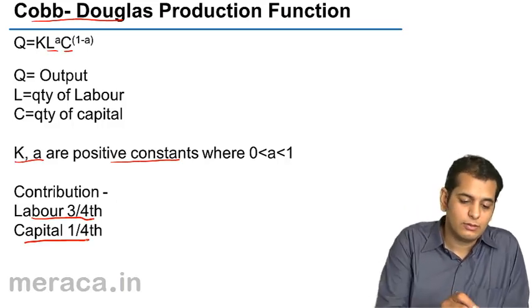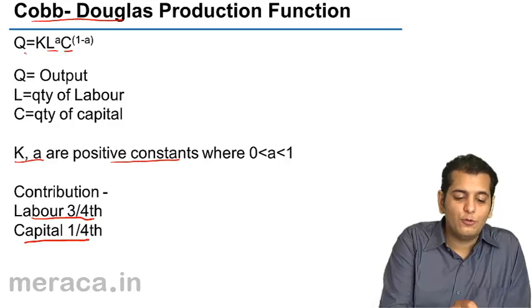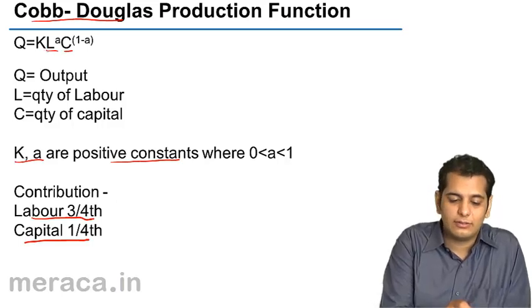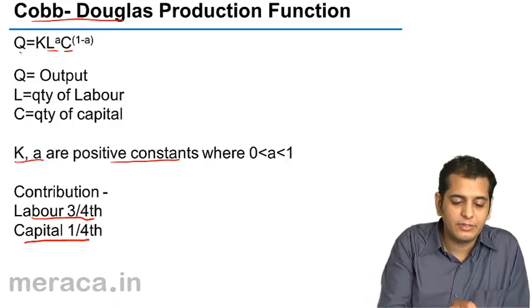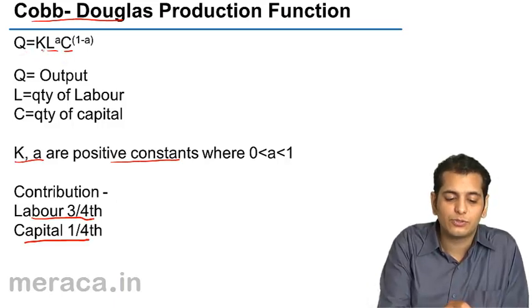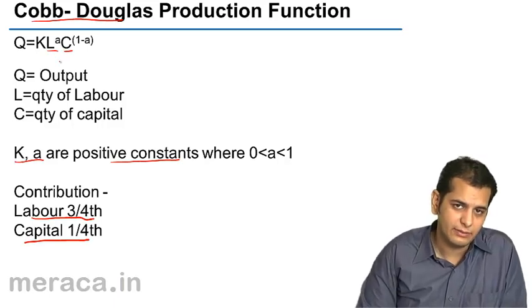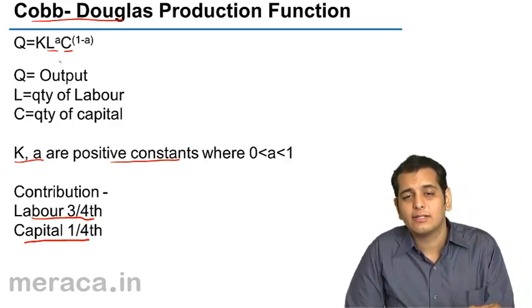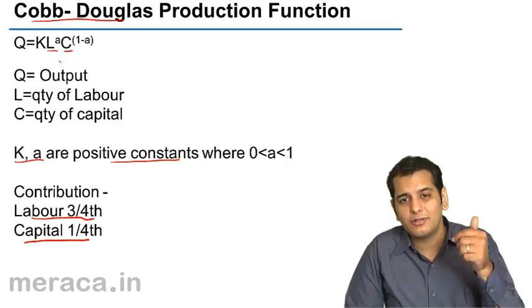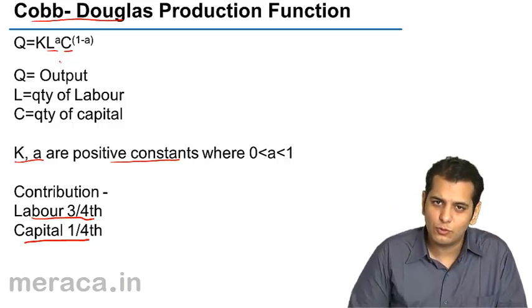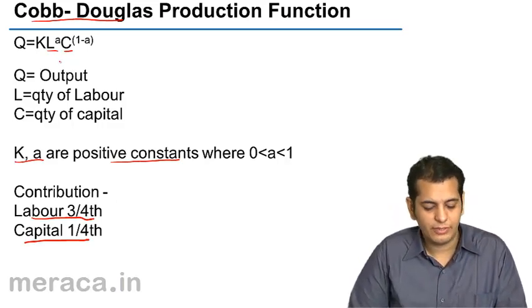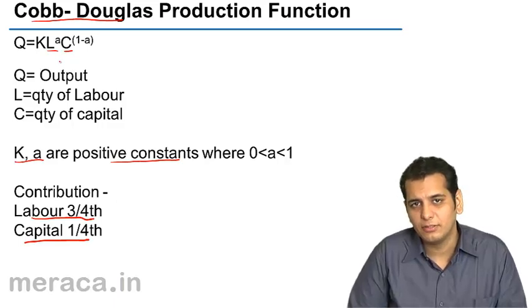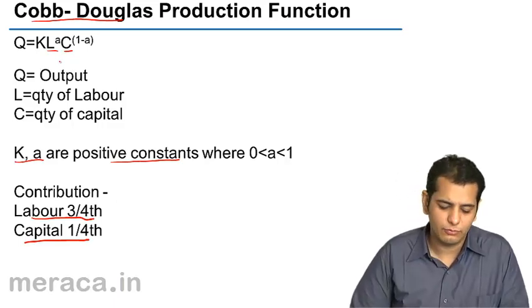Look, output is a function of labour and capital. They have given the formula Q equals K into L raised to A into C raised to 1 minus A. Now, in these, they said that the contribution of labour to the total output is three-fourth, whereas the contribution of capital to the output is one-fourth.